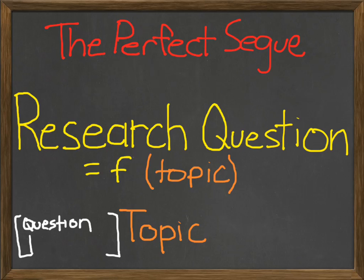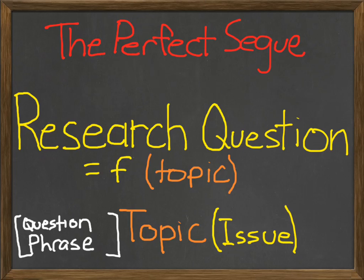And for you mathletes out there, it's a function of your topic. To write out your research question, you just take the topic, put down some question phrase around the topic — like who, what, or where — then write down the issue or problem regarding the topic that you want to address. Top it off with a question mark, smooth out the edges, and you have yourself a research question. See, that wasn't so bad.